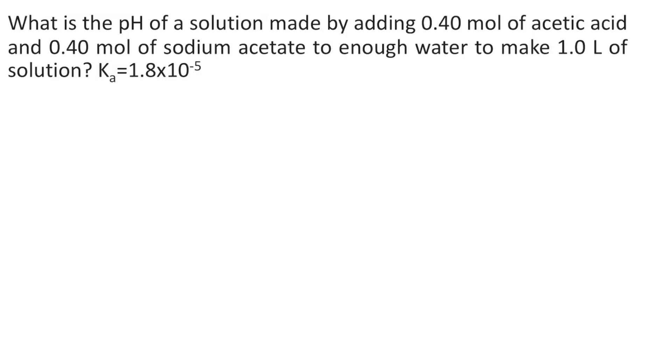What is the pH of a solution made by adding 0.40 moles of acetic acid and 0.40 moles of sodium acetate to enough water to make one liter of solution? We are also given here the Ka of acetic acid, which is 1.8 times 10 to the negative 5.